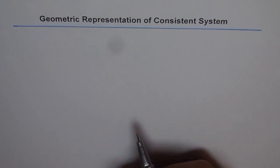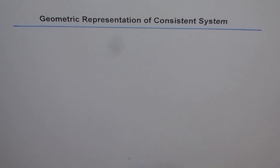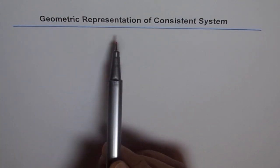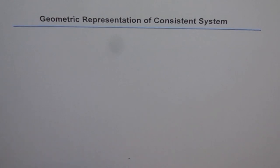Whether the solution is unique or they have an infinite number of solutions, we consider that to be consistent. If there is no solution to the system of equations, then we say it is an inconsistent system. So let's first consider geometric representation of consistent systems in this video and then look at inconsistent systems in another video.